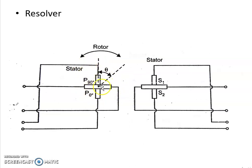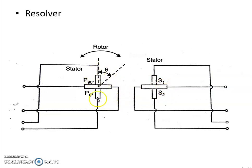The stator voltage is transmitted to another set of stator-rotor combinations by means of magnetic coupling. In this way, angular data transmission is achieved with the help of a resolver — the angular displacement is represented as a stator voltage, and that voltage is transmitted to another stator winding. As theta increases or decreases, the voltage obtained across the secondary stator also increases or decreases.